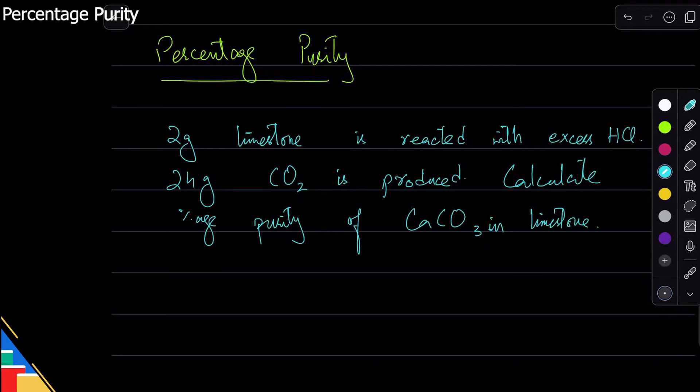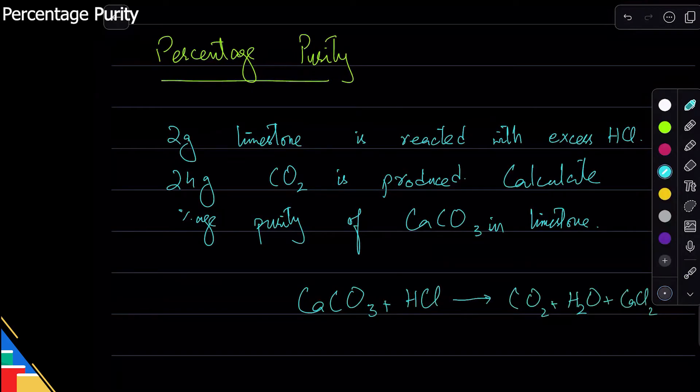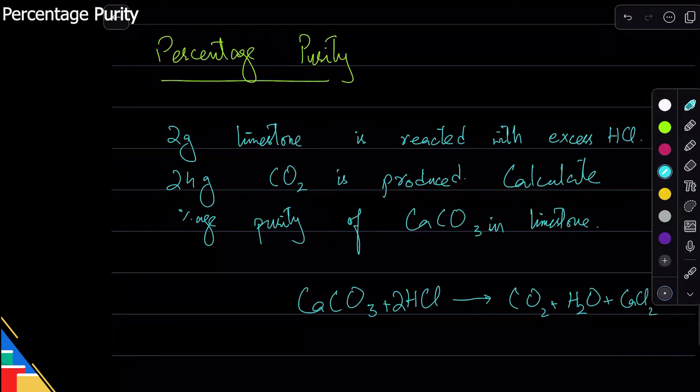Now limestone has CaCO3 which reacts, so the equation for that is CaCO3 + HCl produces CO2 + H2O + calcium chloride. Now you already know that this equation is acid-base reaction and how it produces carbon dioxide and everything. We have seen that.